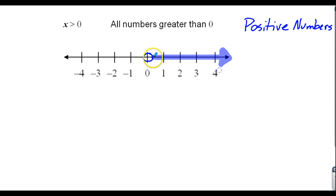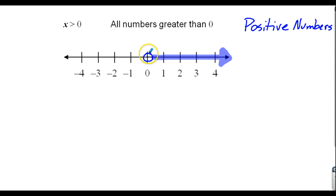You might be looking at this and wondering why I wrote an open circle here. The reason is because if I'm looking for numbers greater than zero, zero doesn't work — zero is not greater than zero. In fact, zero is not a positive number, so I'm not including it. What I'm doing is talking about getting really, really close to this, but not including it. You can think of zero as the beginning of it not being true — this is not part of the answer, but anything bigger than that is.